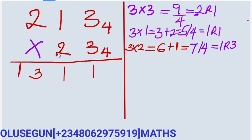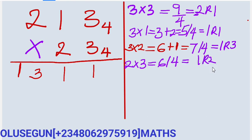You start the second row with 2. So 2 times 3 gives us 6. And 6 is greater than 4, so it goes in 1, remainder 2. You are going to write the 2 here.